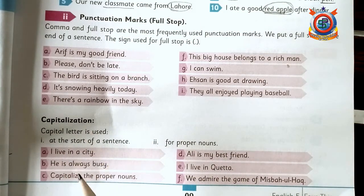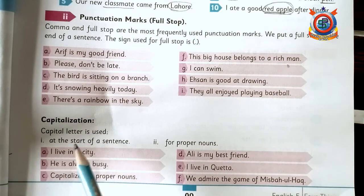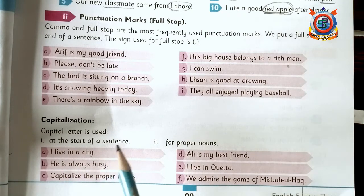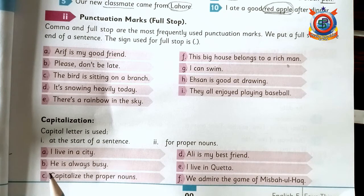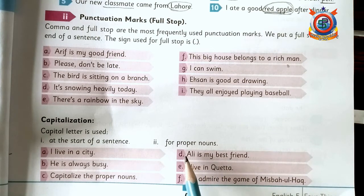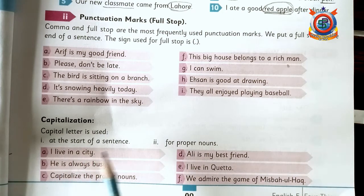Capitalization — ہم کب استعمال کرتے ہیں؟ Capital letter is used in two places. پہلی جگہ: at the start of a sentence. جب ہم sentence start کرتے ہیں تو پہلا letter ہمیشہ capital ہوگا۔ For example: 'I live in a city' — I is capital. 'Ali is my best friend' — Ali میں یہ A capital ہے۔ So at the start of a sentence ہم capital letter استعمال کرتے ہیں۔